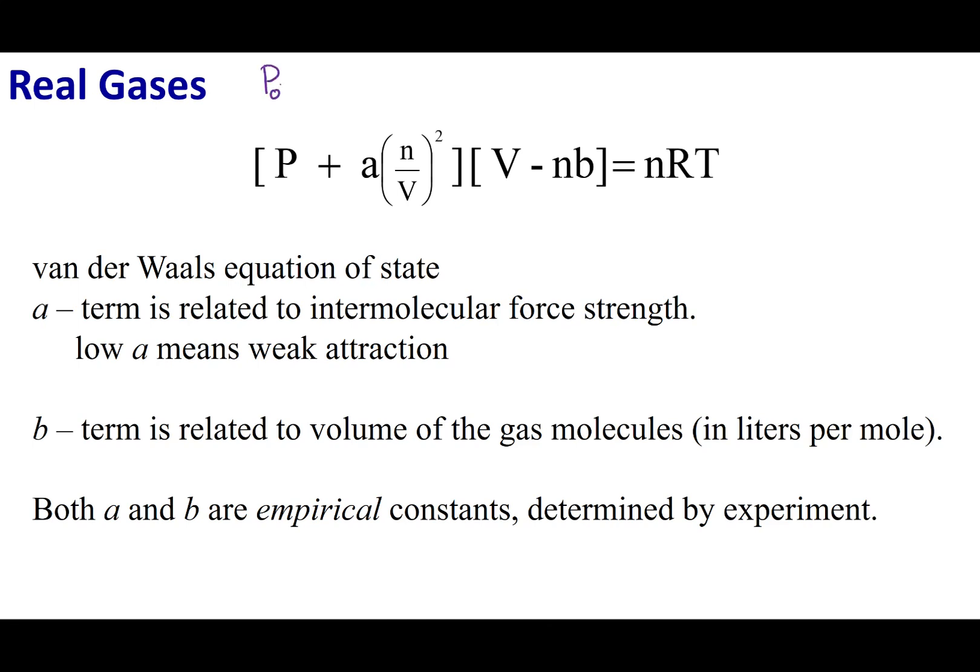What I have is I have an observed pressure. I have my volume, which is the real volume of my container, equals nRT. So this is essentially PV equals nRT. But let's take a look at some of these correction terms.